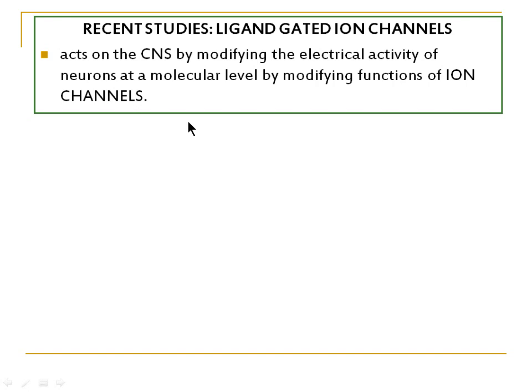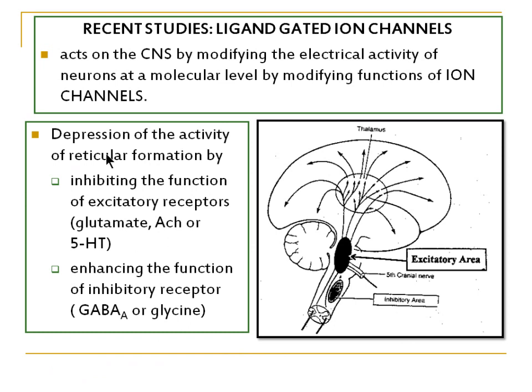There are also more recent theories. The first is the Ligand-gated ion channel theory. According to this theory, general anaesthetics act on the Central Nervous System by modifying the electrical activity of neurons at the molecular level by modifying the functions of ion channels. The anaesthetic alters ion channel activity, inhibiting the electrical activity of neurons in the CNS, making them inexcitable and reducing pain perception.